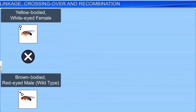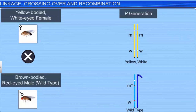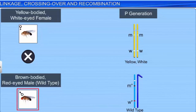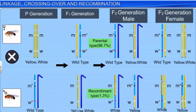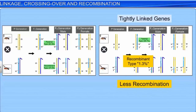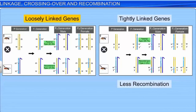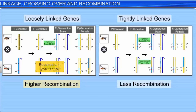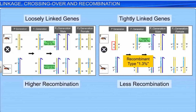In another experiment, Morgan crossed white-eyed miniature-winged females with the genotype small w small m, with red-eyed normal-winged males with the genotype small w plus small m plus. Morgan noticed that tightly linked genes, or genes nearer to each other, showed very little recombination, while loosely linked genes, or genes far from each other, showed higher recombination. For example, the yellow and white genes showed a recombination of just 1.3%, as these genes were tightly linked, while the white and miniature genes showed a recombination of 37.2%, as these genes were loosely linked.